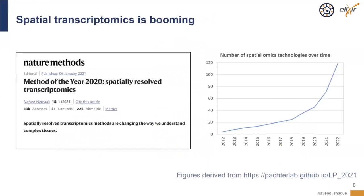Spatially resolved transcriptomics is booming. It was awarded Nature Method of the Year a few years ago, back in 2020. We've also seen a massive rise in the number of spatial omics technologies over the last few years. In particular, in the last two or three years, we're seeing a doubling of the methodologies available to generate spatial omics data.